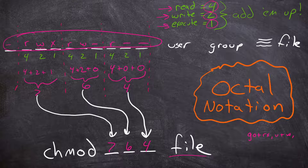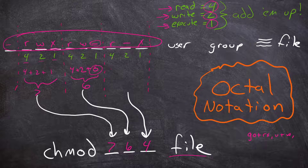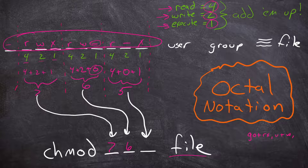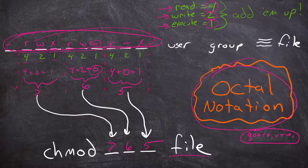So 'chmod 764' gives us rwx, rw-, r--. Every time there's an R that's 4 points, every W is 2 points, every X is 1 point, and if it's not set it's zero. That's called octal notation — it's a really quick way to set the permissions for a file without going through a long string of pluses, minuses, R's, X's, G's, O's, and U's. It's just a shortcut.